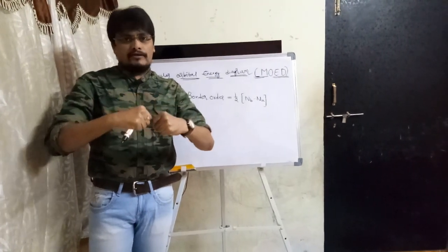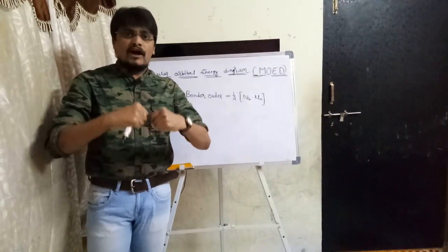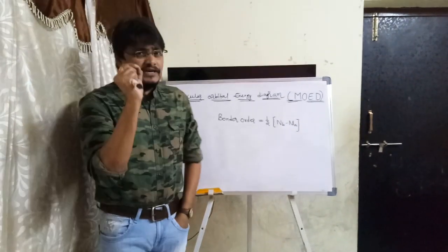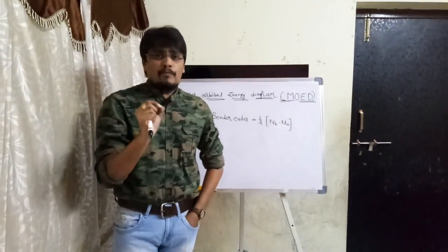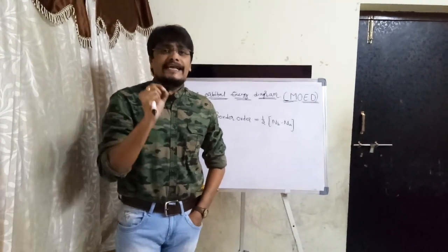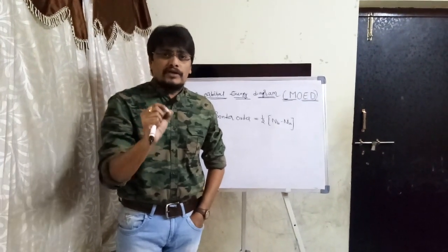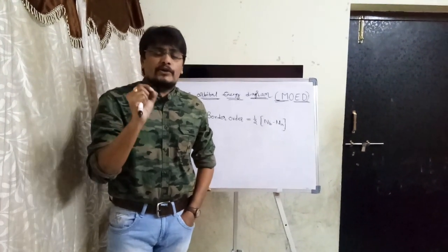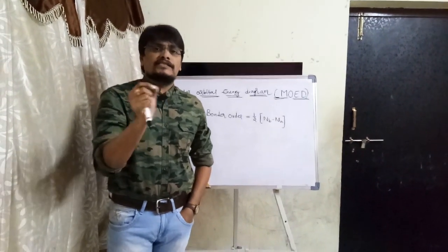I will explain why He₂ does not exist in terms of Bond Order in an upcoming video. So remember: the first information revealed by constructing the Molecular Orbital Energy Diagram is the existence of the molecule — and if Bond Order is less than or equal to 0, that molecule does not exist.